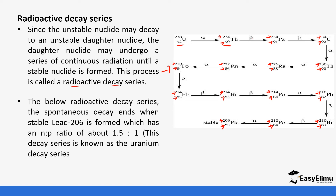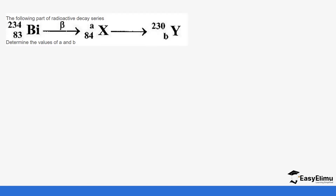This process continuously happens until it reaches a stable nucleus. Now we are going to look at sample questions regarding the radioactive decay series. The following parts of a radioactive decay series require us to determine the values of A and B. In the first step there is a beta particle.